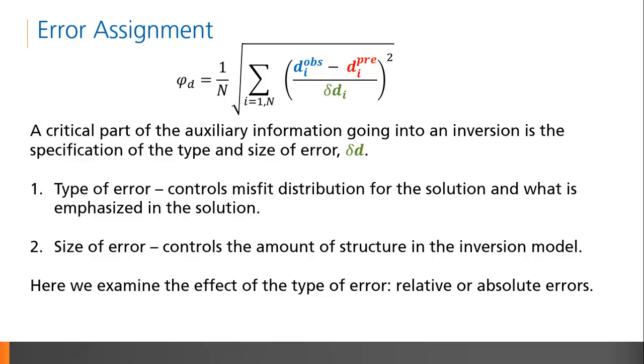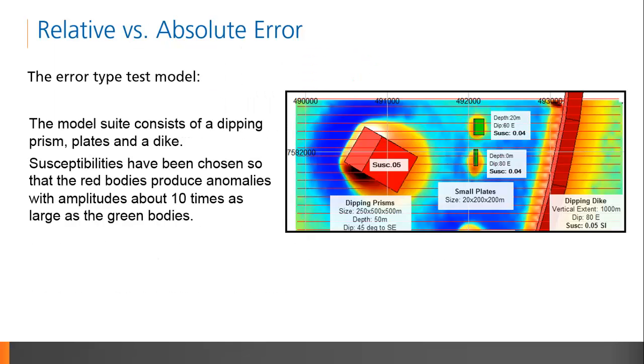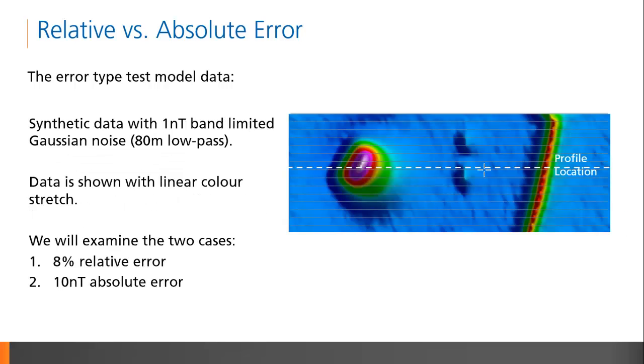Understanding how the size of the error impacts the solution is straightforward. The larger the error value, the larger the difference between the observed data and the predicted data is allowed to be. This permits more flexibility in the inversion, and will often result in a very smooth model. Understanding how the type of error impacts the solution requires some illustration. Let us consider a synthetic model suite with a dipping prism, some plates, and a dike. The red bodies here have a higher susceptibility, and so their signal dominates the magnetic response. The green bodies will result in a more subtle feature.